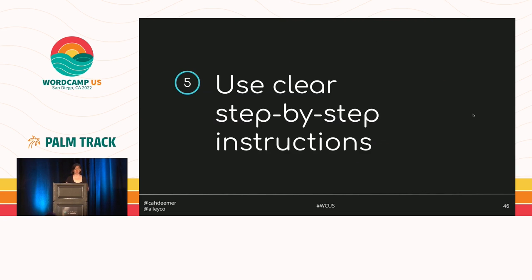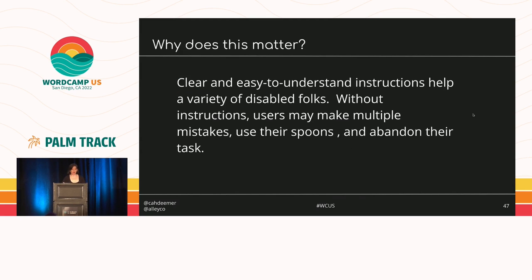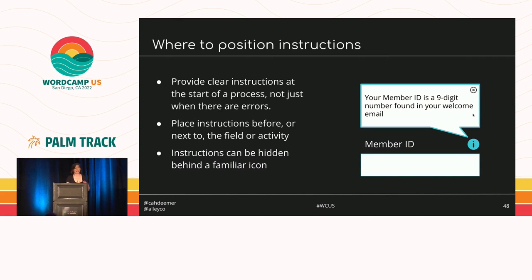Our fifth solution is to give clear step-by-step instructions so users can avoid making mistakes. Clear instructions help users prevent errors and increase their ability to complete a task independently. They help users with anxiety, memory and concentration impairments, reading and math comprehension issues, and general communication impairments. Without instructions, users can make multiple mistakes, use their spoons, and abandon their task. Place instructions before or next to the field or activity — don't wait until the user has made a mistake to give them help. It's fine to hide them behind a familiar icon like the info icon.